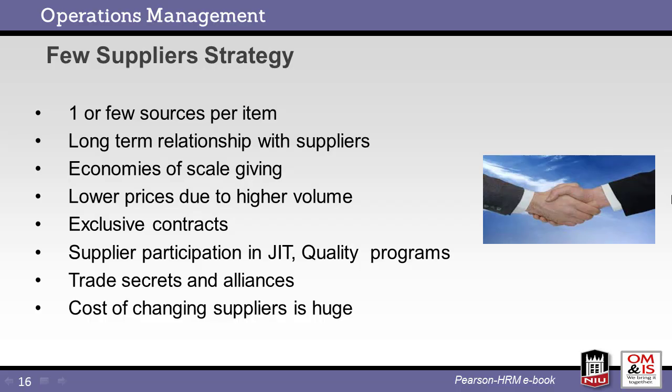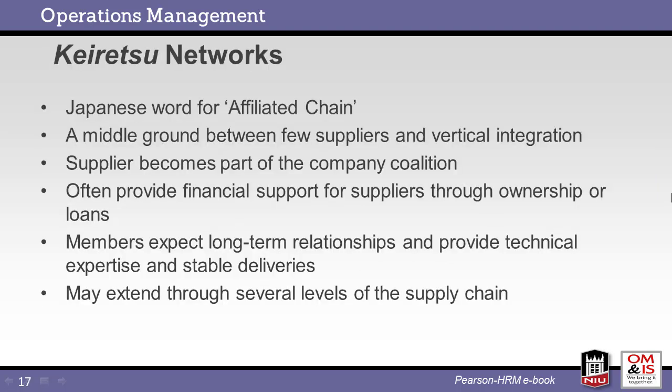Conversely, the few supplier strategy is focused on partnership between companies. Exclusive contracts are common with shared data and skills to enhance the overall result. The risk is that changing suppliers is very costly and disruptive. Keiretsu networks are strong coalitions of companies and fall between the strategies of few suppliers and full integration. Extensive sharing of data and expertise exists, financing often comes from a single bank group, and this is a long-term relationship. The partners within the Keiretsu network are highly dependent upon one another.